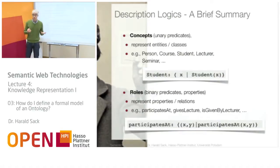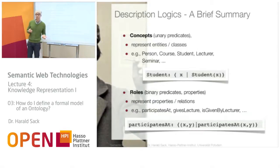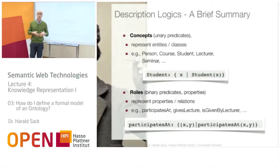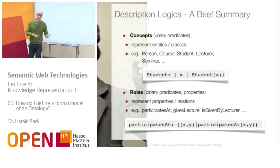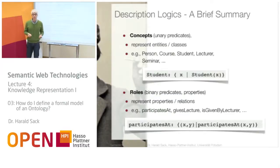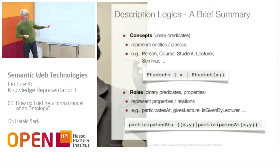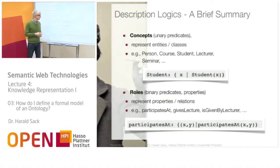In description logics, you have concepts or classes. They can be described as unary predicates and they represent entities and classes — for example, the class of persons, the class of courses, the class of students, the class of lecturers, the class of seminar, and so on. They can be defined as unary predicates, meaning students are all x that satisfy that unary predicate.